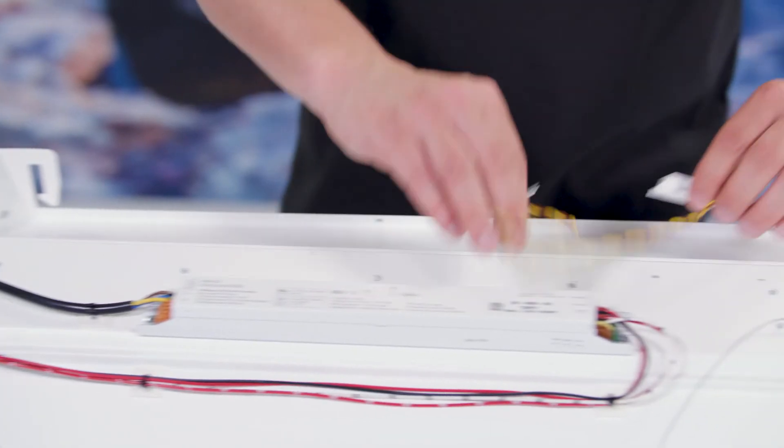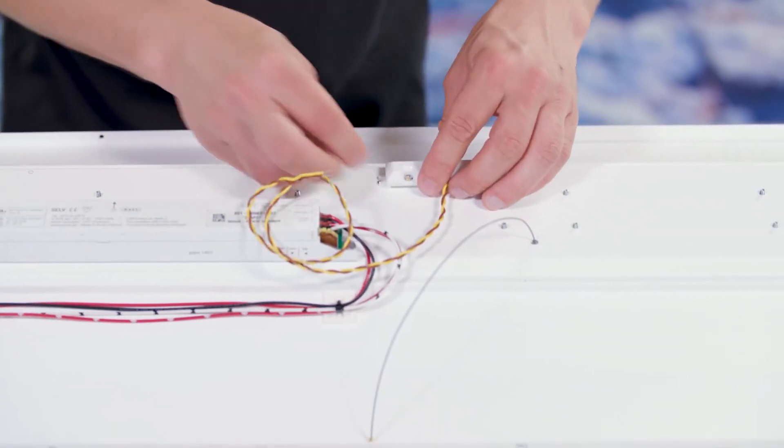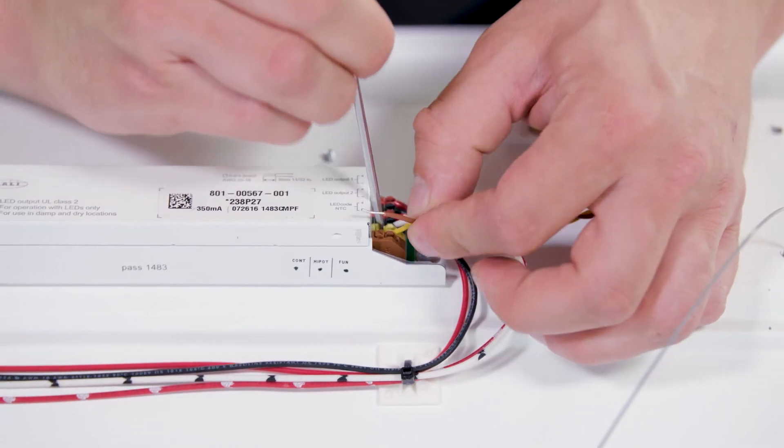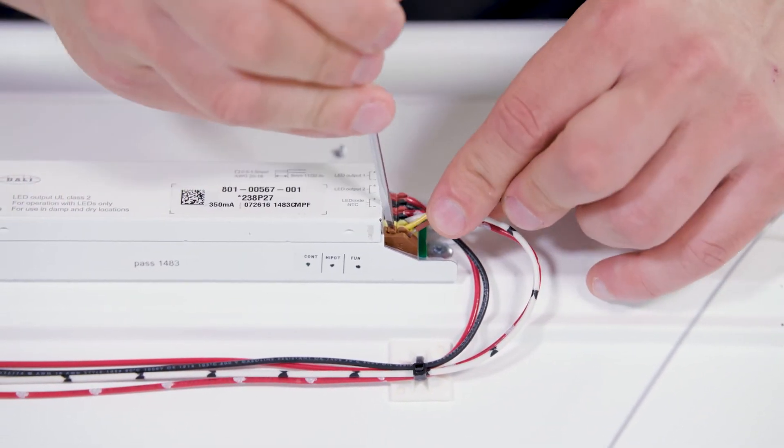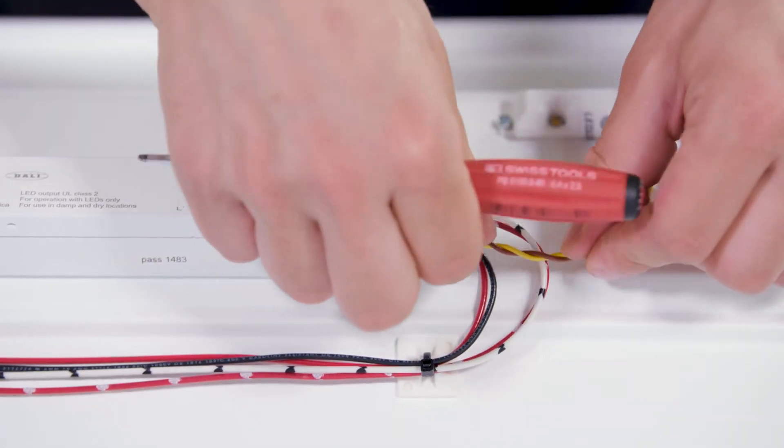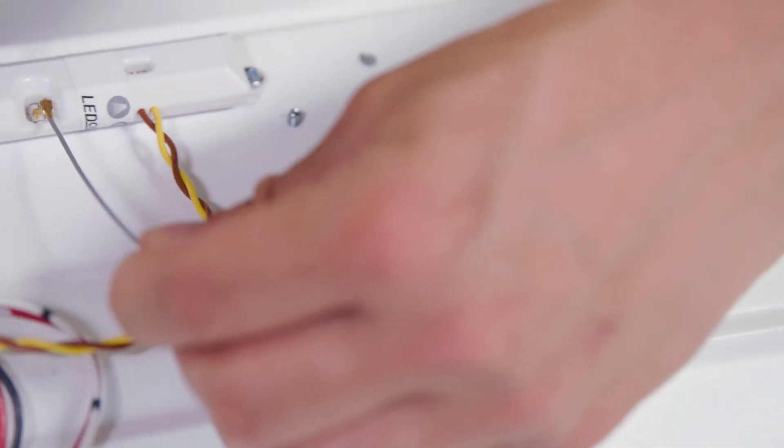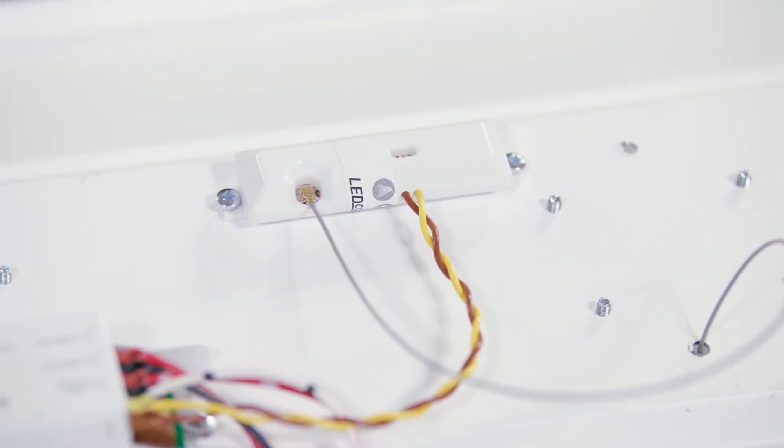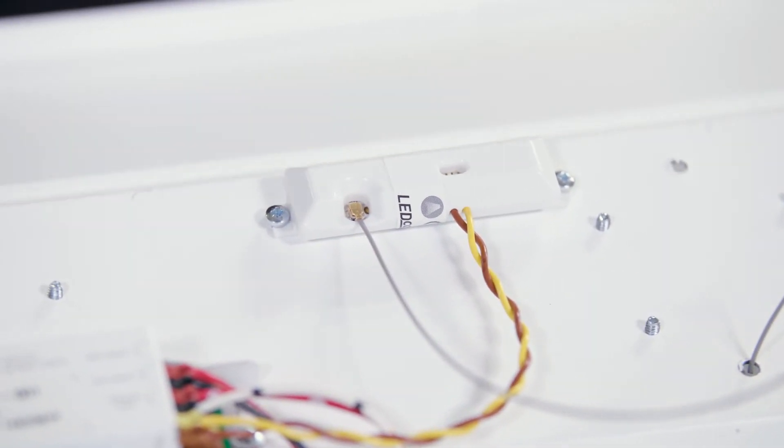Mount the LEDCODE BLE radio with two screws to the luminaire, and connect the yellow and brown LEDCODE wires to the LEDCODE interface of the AldoLED LED driver. Connect the remote antenna cable to the coax connector of the LEDCODE BLE radio using the compatible coax insert tool.